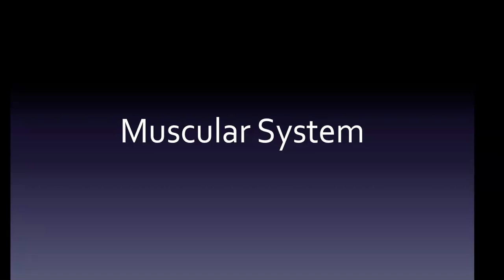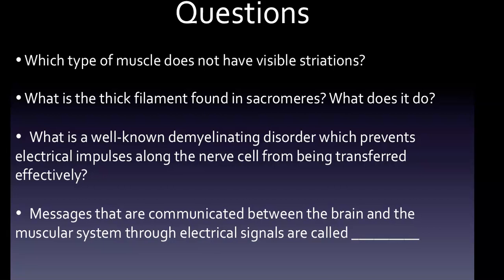Muscular system — let's jump right in. We have four questions here which will also show up at the end of this video where you can test yourself. Which type of muscle does not have visible striations? What is the thick filament found in sarcomeres and what does it do? What is the well-known demyelinating disorder which prevents electrical impulses along the nerve cell from being transferred effectively? And messages communicated between the brain and the muscular system through electrical signals are called what?